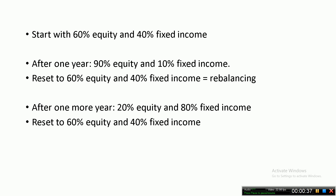That's called rebalancing. On the other hand, in the next year, if I get a disastrous return and my equity portion reduces so much that it is only about 20% of my portfolio and therefore fixed income is 80%, I can rebalance it back to 60% equity and 40% fixed income in the hope that when equity recovers, I will get a decent return. So this is two-way rebalancing.